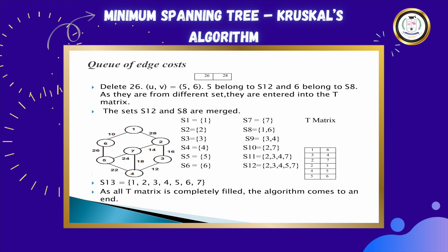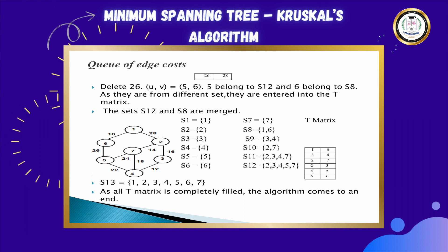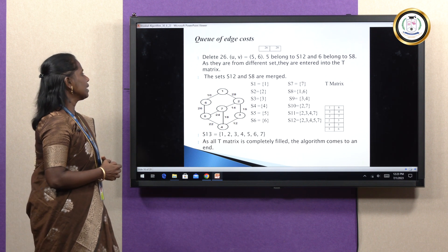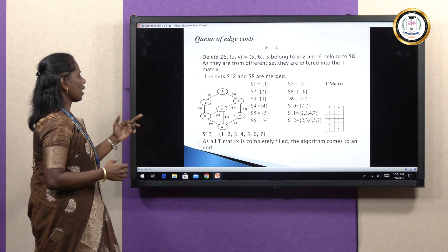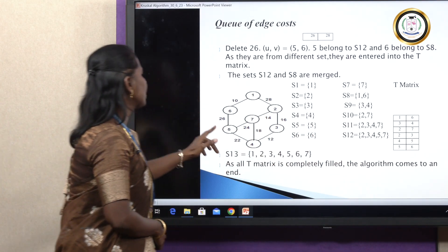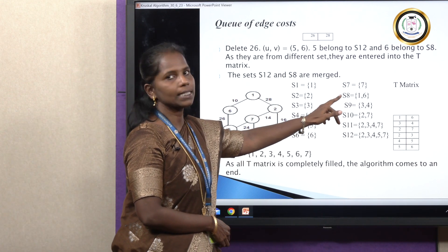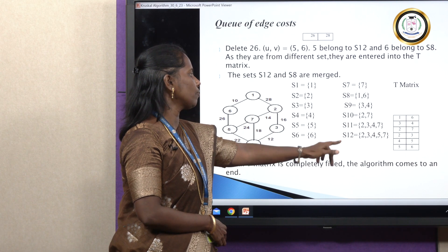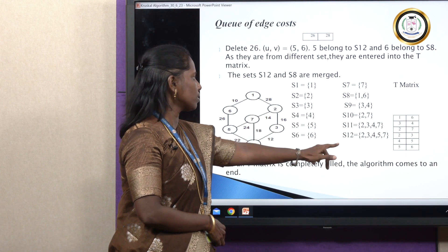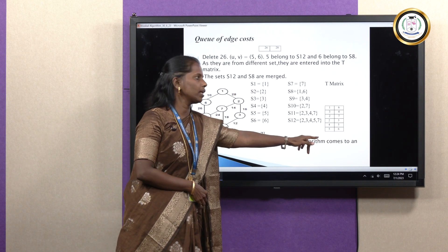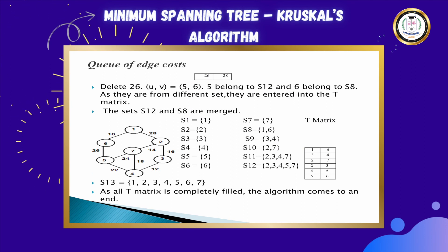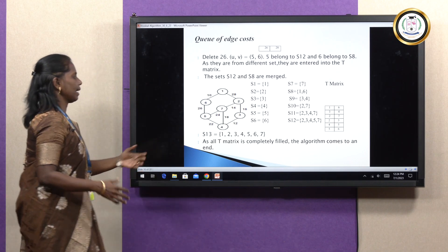Take the next value, 26. The nodes associated with 26 are 6 and 5. Check if 6 and 5 are in the same set or different sets. 5 is present in S12 and 6 is present in S8 — always refer to the latest set for U and V. Since they are in different sets, place 5 and 6 in the T matrix. After placing, merge S12 and S8 to get a new set S13.